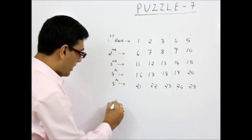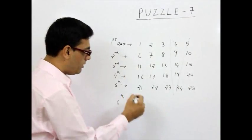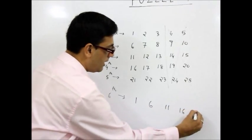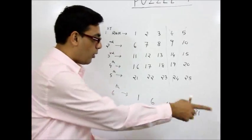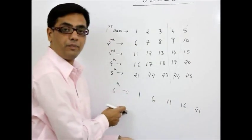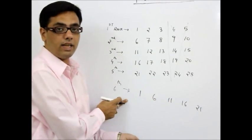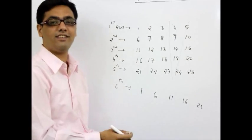Now 6th race, what I will do is I will make the toppers run. So 1, 6, 11, 16 and 21. This is my 6th race, all the toppers. And let's say this is the order. This is first, this is second, this is third in my 6th race.